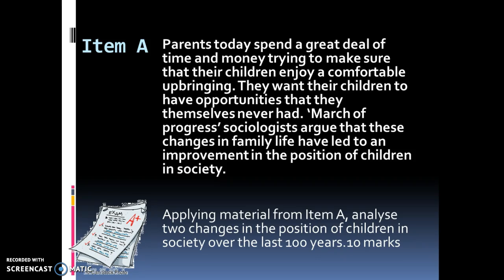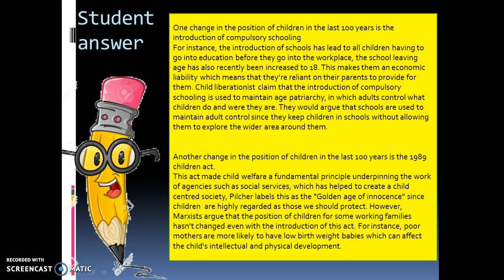Parents today spend a great deal of time and money trying to make sure their children enjoy a comfortable upbringing. The children have opportunities themselves they've never had. March of Progress sociologists argue that these changes in family life have led to improvements. Basically, what you've got to do is select material from the item which indicates two changes in the position of children in society over the last 100 years. And it is a 10-marker. So let's have a look at the student response. What I quite like about this answer is I can clearly see as an examiner that the student has given two explanations. They've started on new lines for each one, used the wording from the question, backed it up with examples, and split it up by missing a line in between.